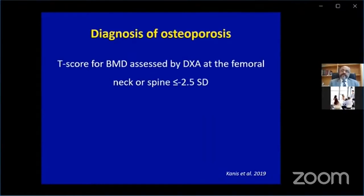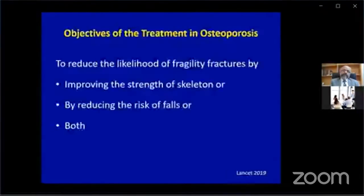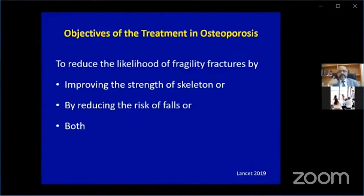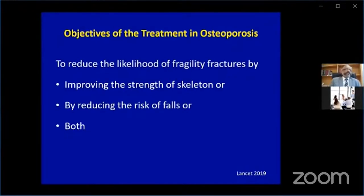Coming to the practical part: the T-score for BMD is assessed by DXA at the femoral neck or spine. If it's below minus 2.5, that is diagnosed as osteoporosis. But what is the objective of treatment? I don't care what my bone density is or whether the medicine changes my bone density. What I want is a reduction in my fracture risk — it's like treating cholesterol because you want to reduce heart attacks. The endpoint here is fracture, and our goal is to reduce the likelihood of fragility fractures.